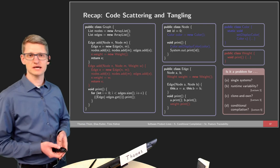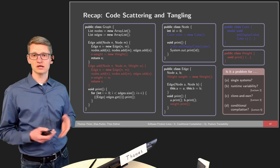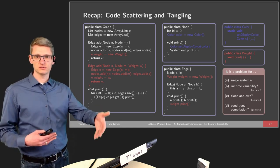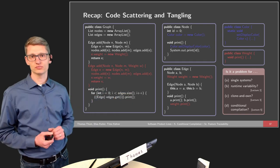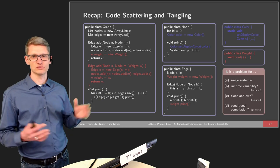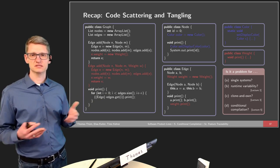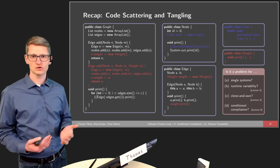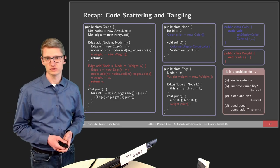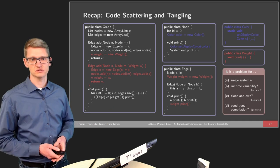Is code scattering and tangling a problem for clone-and-own? Yes, it is. Clone-and-own is merely a technique to copy the whole product into different branches, or even split the system into different build systems. Still, there's no notion of a feature, so we can hardly assess all the parts relevant for a certain feature — it will be mixed somewhere in the files of those systems.